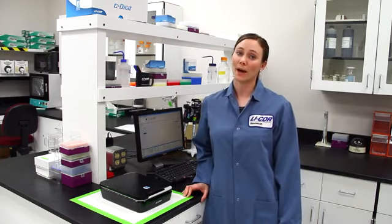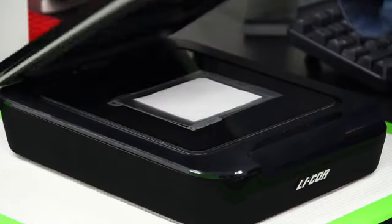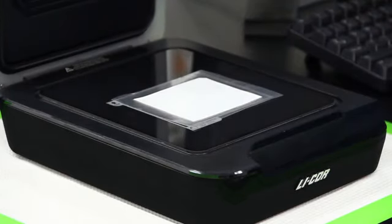Just like during film exposure, make sure that the membrane remains wet while scanning on the C-Digit. You can either wrap it in plastic or place the substrate right on the scanning surface. And remember, the blot goes protein side down on the C-Digit.